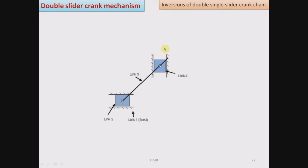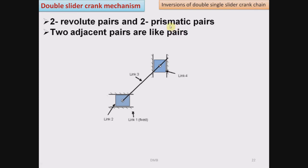Double slider crank chain is obtained from single slider crank chain by replacing one of the turning pairs in single slider crank chain. It consists of two revolute pairs and two prismatic pairs. One more significant characteristic of double slider crank chain is that two adjacent pairs are always like pairs.